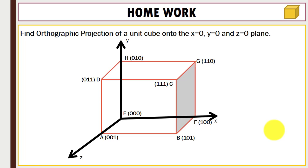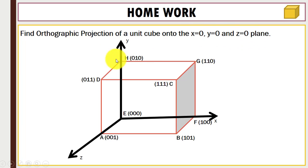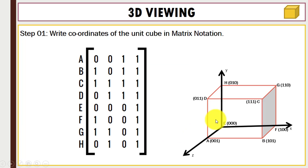In this question we have to find out the orthographic projection for a unit cube for x=0, y=0, and z=0 planes — so we have three planes where x is 0, y is 0, and z is 0. You can see this is the cube; we have points here with different coordinates.